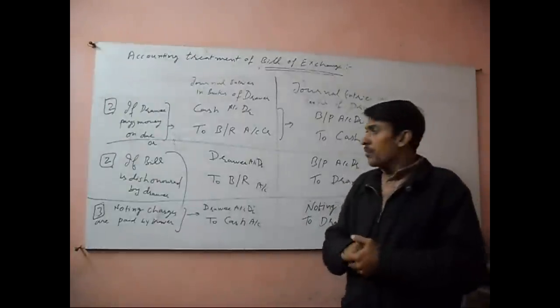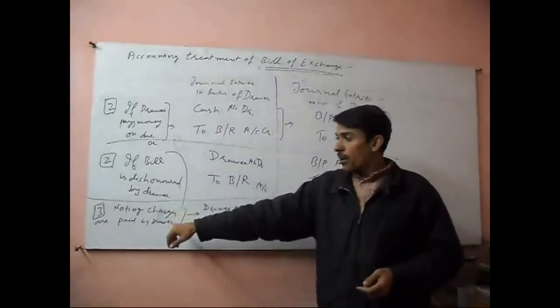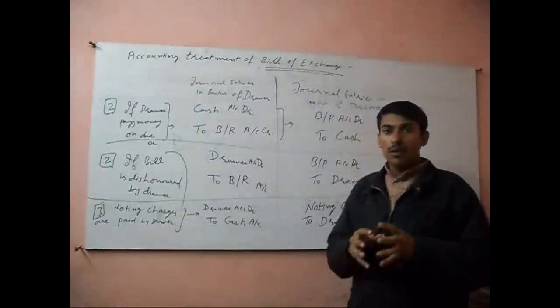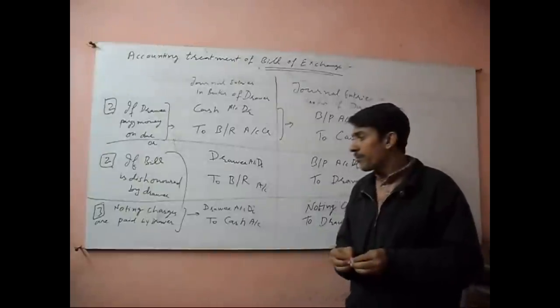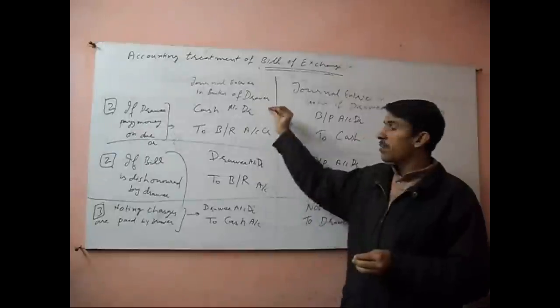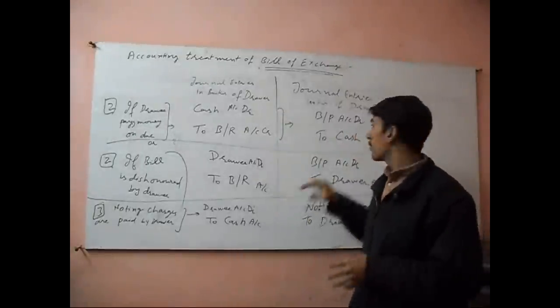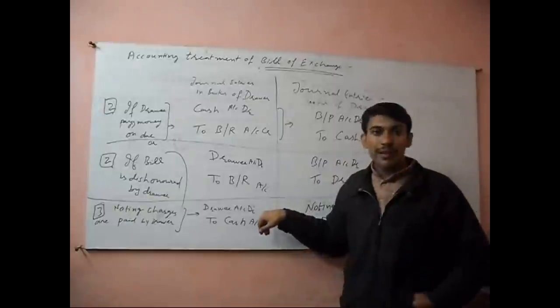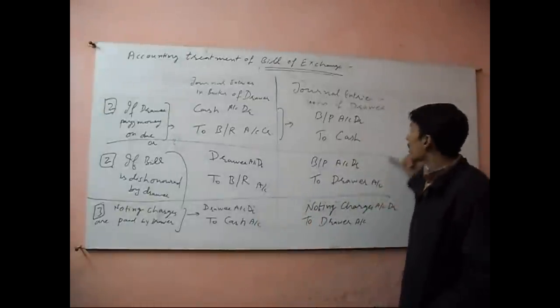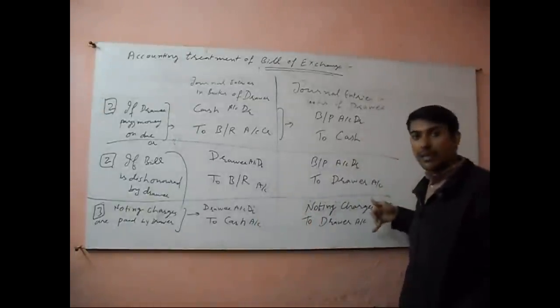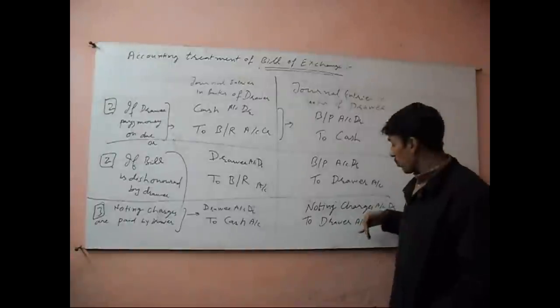At that time, when bill of exchange is dishonored, we will note it in a notary office. And Drawer will pay on behalf of Drawee and he will get the money from Drawee. So we will write Drawee account debit to cash account. And in the books of Drawee, we will write noting charges account debit to Drawer account.